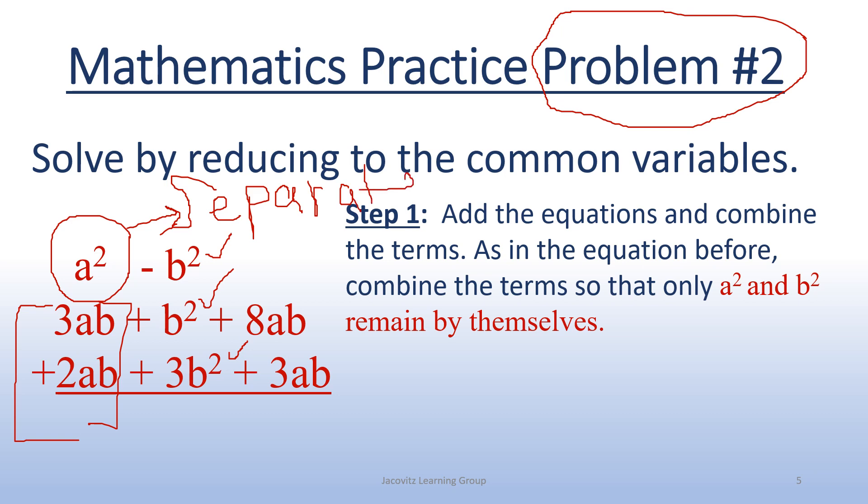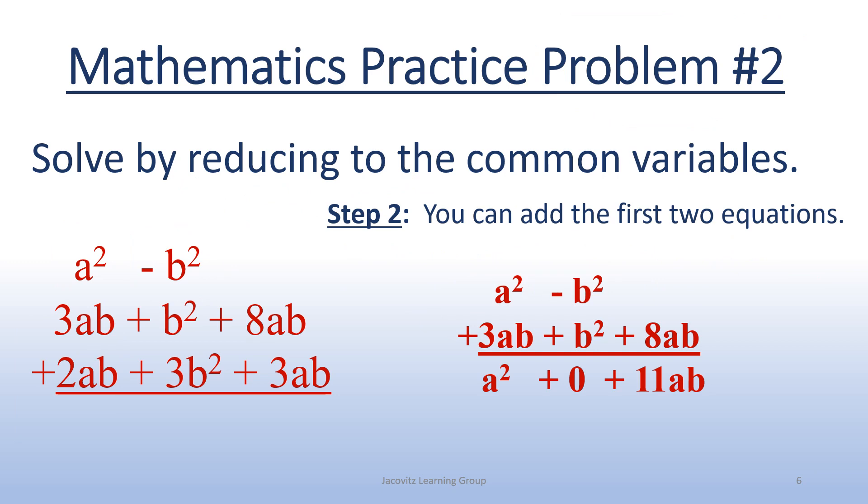Now, we're going to go ahead and move on to step 2. We're on practice problem number 2. You have three equations. You can condense if you want to, but I want you to look at something. You can add the first two equations, but here you have a term by itself, because a squared doesn't show up here, doesn't show up here. AB doesn't show up here. So you have a separate term. Now we're going to do the first two equations, and we're going to leave this one alone for now.